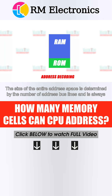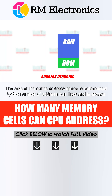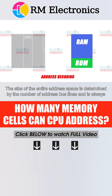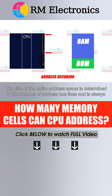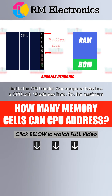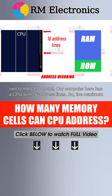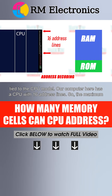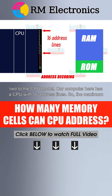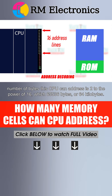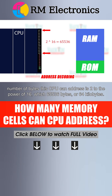The size of the entire address space is determined by the number of address bus lines and is always tied to the CPU model. Our computer here has a CPU with 16 address lines, so the maximum number of bytes this CPU can address is 2 to the power of 16, which is 65,536 bytes or 64 kilobytes.